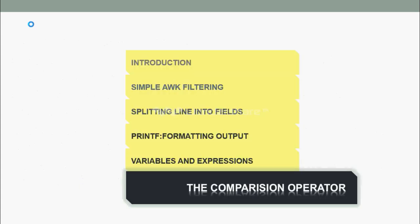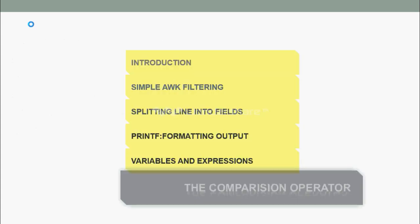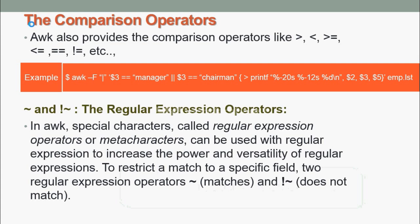Next, we are going to see the comparison operators. AWK provides comparison operators like greater than, less than, greater than or equal to, less than or equal to, equal to, not equal to, etc. Now let us see one example here.